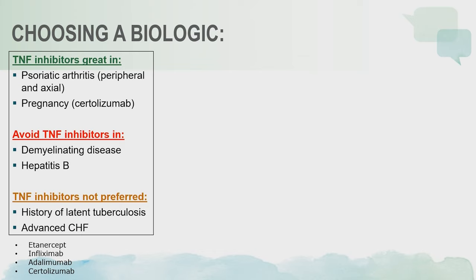When to avoid TNF inhibitors: avoid them in patients with a history of demyelinating disease, such as MS. For those with hepatitis B, you may want to choose another medication due to risk of reactivation. TNF inhibitors are also not preferred in patients with a history of latent TB due to potential risk of reactivation, and there is a soft non-preference in patients with advanced CHF — most of that data comes from infliximab. It's not a strict contraindication, but something to consider when possibly selecting other agents.